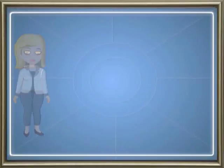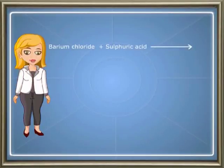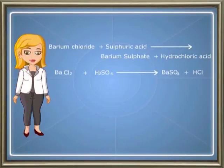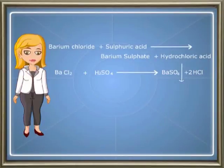Write this equation in words: barium chloride reacts with sulphuric acid to give rise to barium sulphate and hydrochloric acid. Write the unbalanced equation using symbols and formulae. Now balance the chemical equation. Write a downward arrow beside barium sulphate to indicate it is a precipitate.